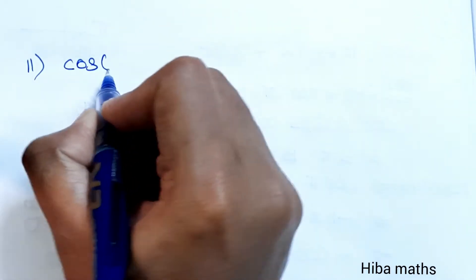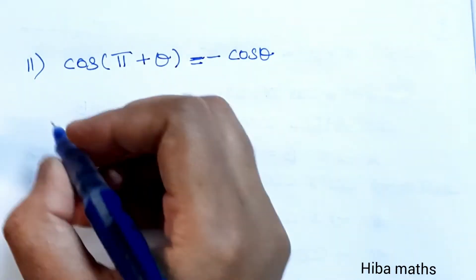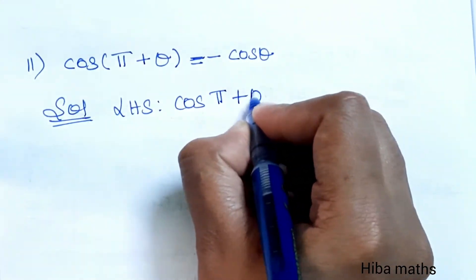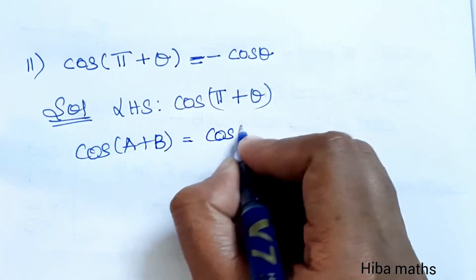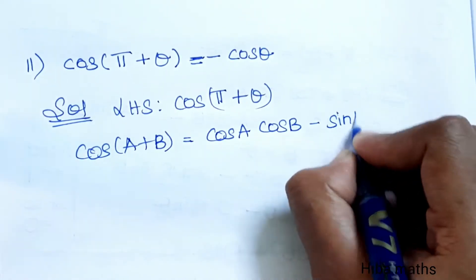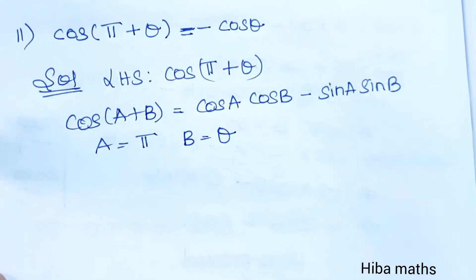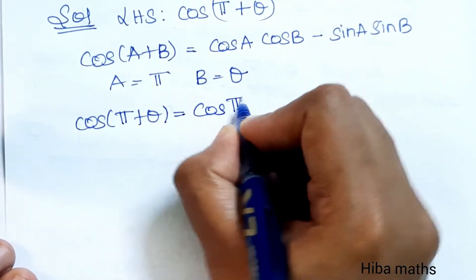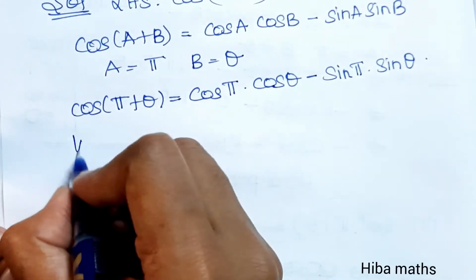Second subdivision: prove cos(π + θ) = −cos θ. This is in the a + b format. Using cos(a + b) = cos a cos b − sin a sin b, with a = π and b = θ, we substitute to get cos(π + θ) = cos π · cos θ − sin π · sin θ.